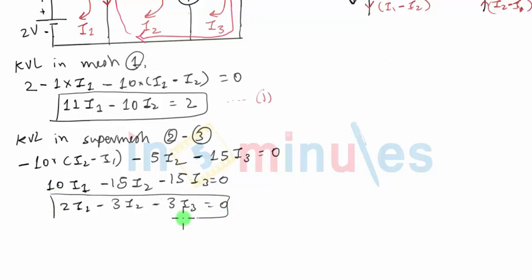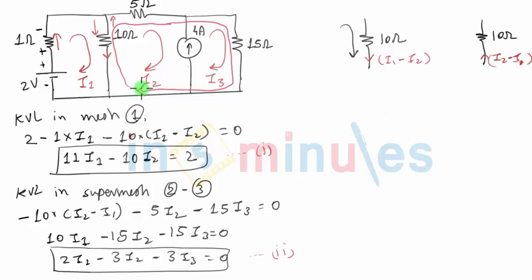So till now we have got two equations. First one from the first mesh, and the second equation we got from supermesh, which is a combination of mesh 2 and mesh 3.